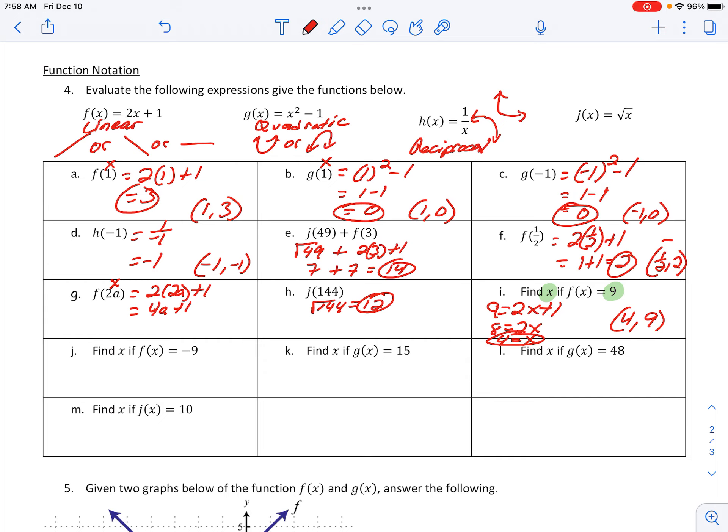Letter j, because it says find x, find the input, find that domain. When the y value, the range, the output is negative 9. So again, we have to create equations to solve. And on this one, we get an x value of negative 5. So x is going to be negative 5 in order to get a y value of negative 9.